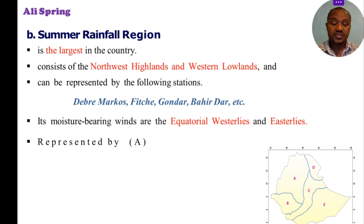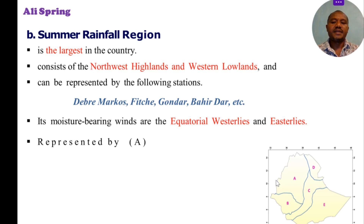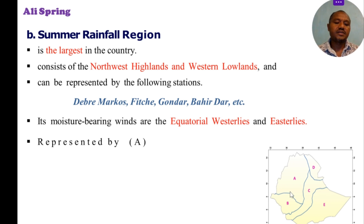The summer rainfall region consists of the north-west highlands and western lowlands. It can be represented by the following stations: Debre Markos, Fitche, Gondar, and Bahir Dar.